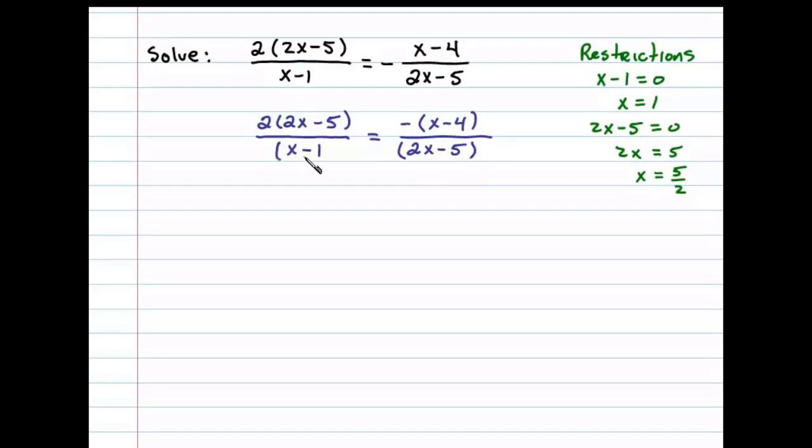Now with this we're ready to cross multiply, so we can say 2 times 2x minus 5 times 2x minus 5 will have to equal negative x minus 4 times x minus 1, and so we can solve this equation as usual.